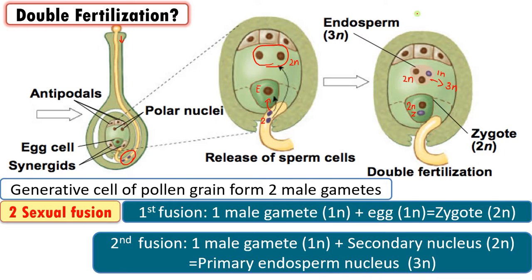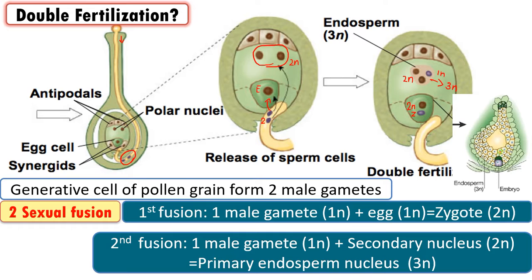The advantage of double fertilization is that the endosperm nucleus divides rapidly and forms a mass of cells that provides continuous nutrition for the developing embryo. Additionally, this nutritive tissue is formed only after fertilization, so energy expenditure on nutrition for the developing embryo is kept to a minimum as the timing is perfect.